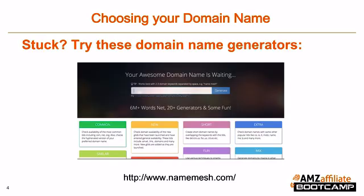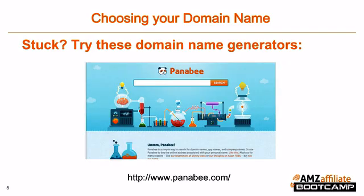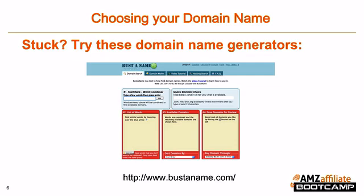I know some of you probably aren't super creative — I know I'm not. I always have a terrible time with names of businesses and books and whatnot. So if you're stuck, try these domain name generators — it's kind of fun and they'll give you some initial ideas. If you're struggling to find ideas for your domain name, go to namemesh.com, panabee.com, or bustaname.com. You can play around with these different tools and they'll give you some great ideas, or at least initial starting points.